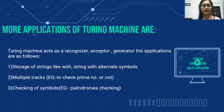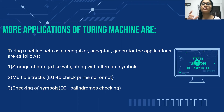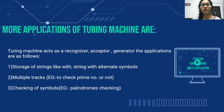Here are some more applications of the Turing machine. A Turing machine acts as a recognizer, acceptor, and generator. Firstly, it can be used for storage of strings — like strings with alternate symbols. Since it consists of a tape with infinite memory, a Turing machine can easily store strings with alternate symbols. Secondly, it can be used for multiple tracks — for example, to check whether a string is prime or not, because it has infinite memory, whereas finite automata with finite memory cannot. Thirdly, it can be used for checking of symbols — for example, to check whether a string is a palindrome. It is easy for a Turing machine to check palindromes because it has infinite memory and can also update the value on which the tape head is present.